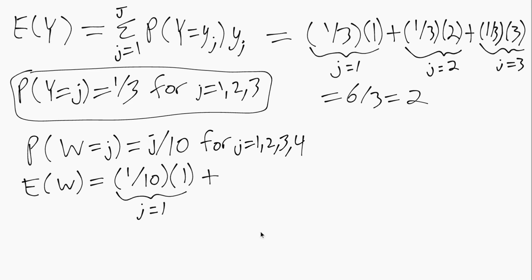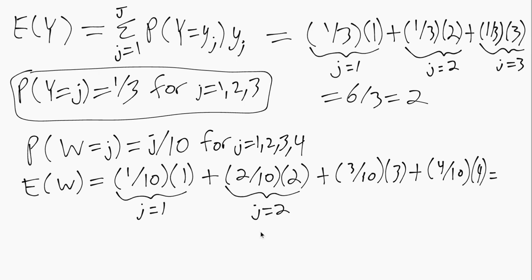And then for the next possible value, which is 2, the probability is 2/10 and the value itself is 2. And then similarly for J equals 3, it's 3/10 times 3. And finally 4/10 times 4. If we do the arithmetic, we get 1/10 plus 4/10 plus 9/10 plus 16/10. Altogether we get 30/10 or 3.